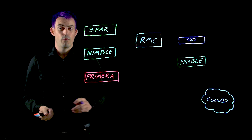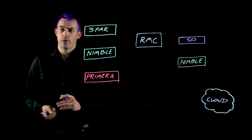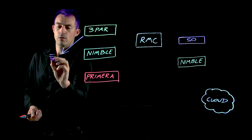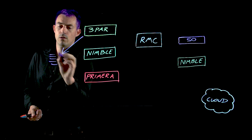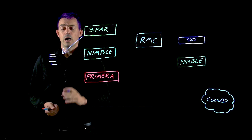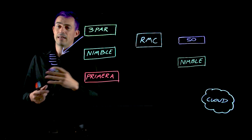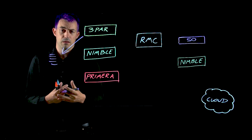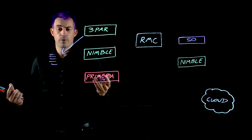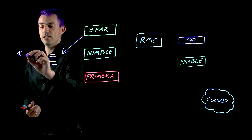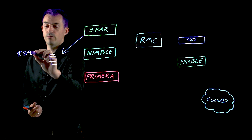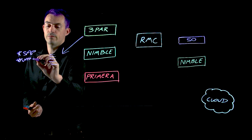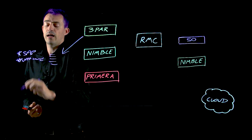RMC started out originally as a snapshot manager for 3PAR. A customer could take snapshots off a 3PAR array and make them application consistent. We can do it with the versions everyone expects, like SQL on 3PAR, but we've also got it for lesser-known ones like SAP HANA, VMware, and Hyper-V.